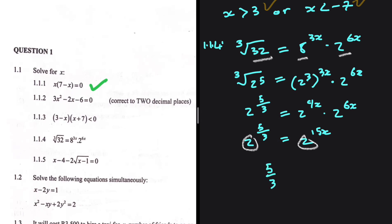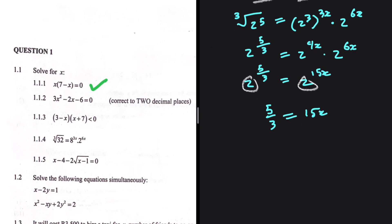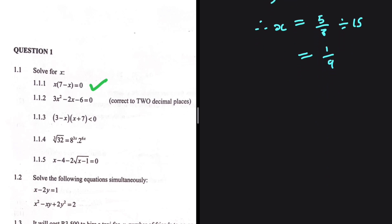We drop the bases and equate the exponents: 5 divided by 3 equals 15x. So x equals 5 over 3 divided by 15, which gives x equals 1 over 9. Just like that, we have the answer to 1.1.4.